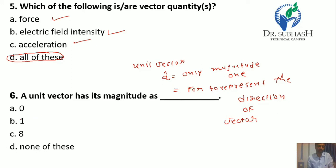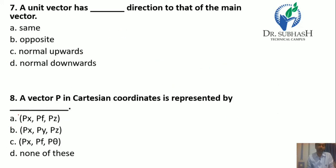Question 7: A unit vector is in the same direction as that of the main vector. We know that a unit vector is used to represent the direction of the main vector, so both have the same direction. The answer is A.